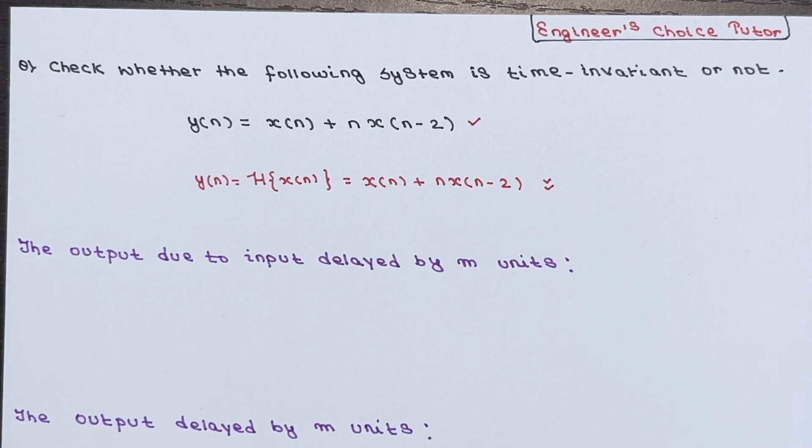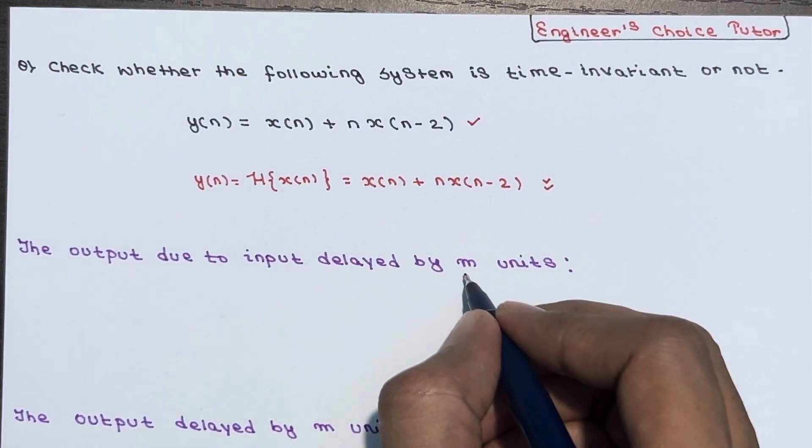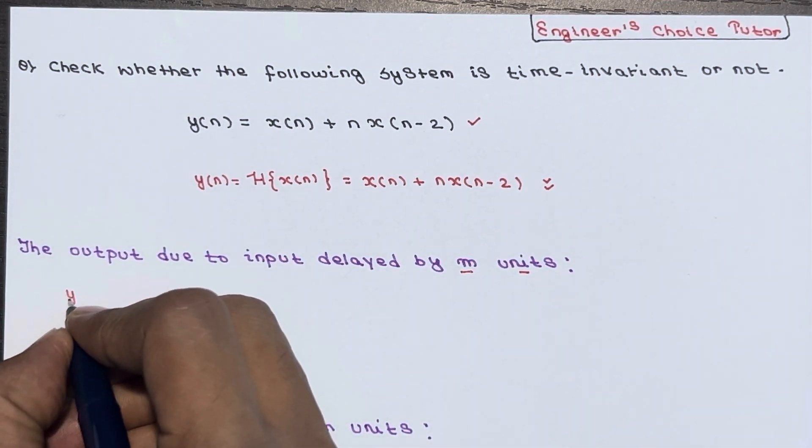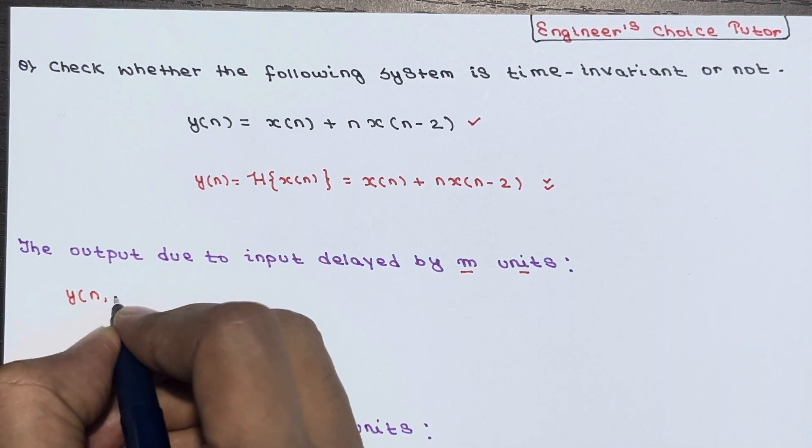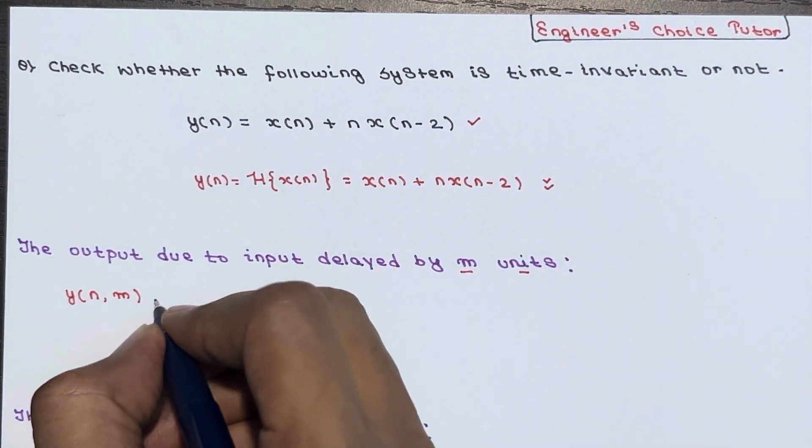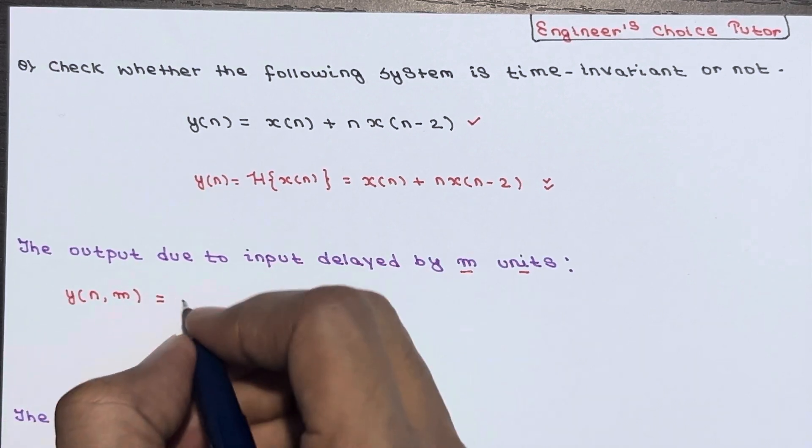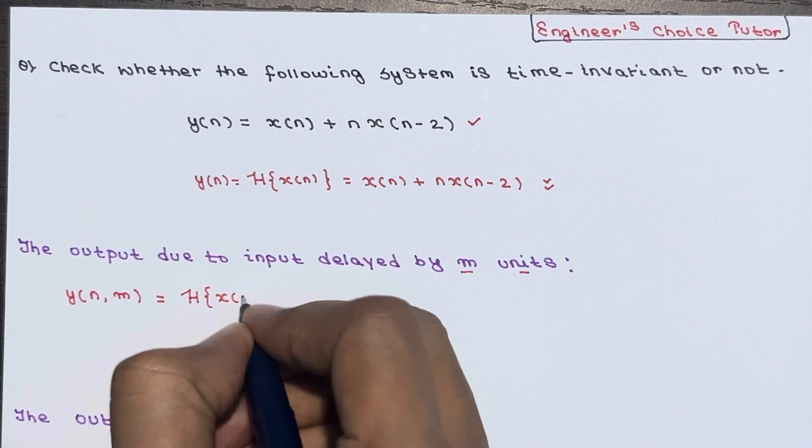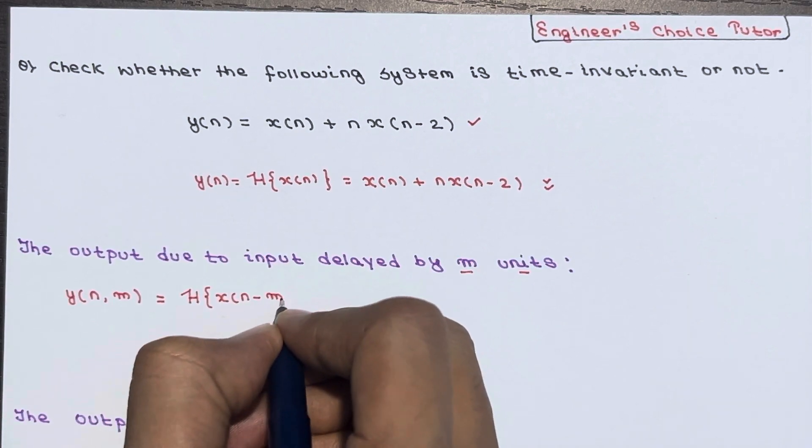Now, you have to calculate the output due to input delayed by m units. So basically, you have to calculate y(n,m). So this is equal to the transform of x(n-m).